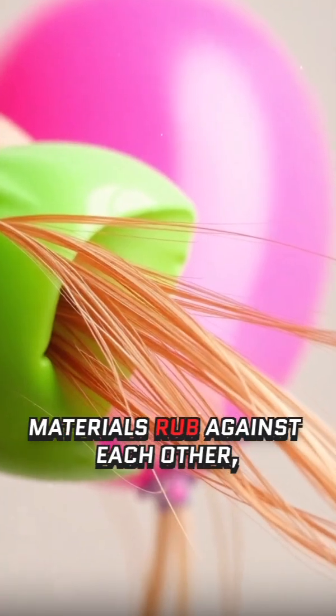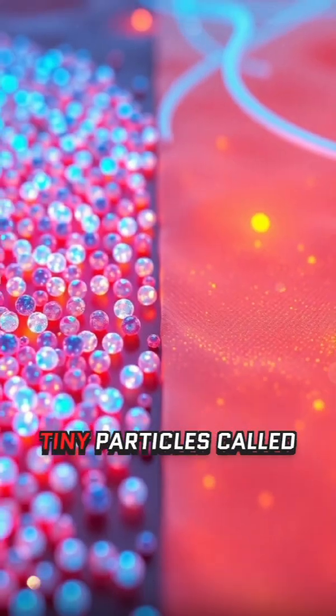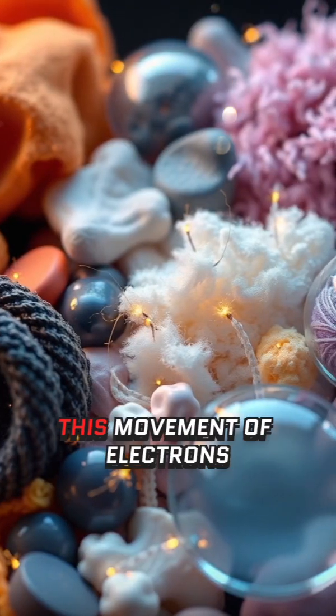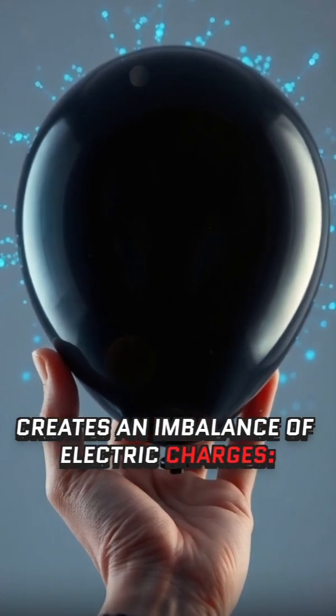When two different materials rub against each other, like a balloon and your hair, tiny particles called electrons can jump from one surface to the other. This movement of electrons creates an imbalance of electric charges.